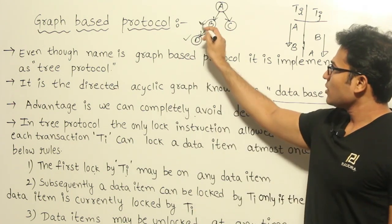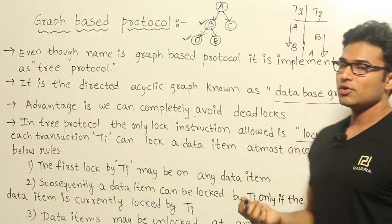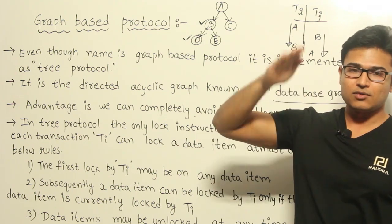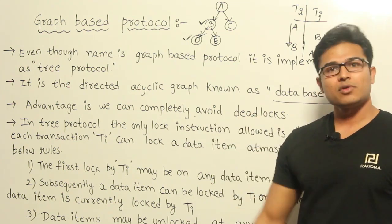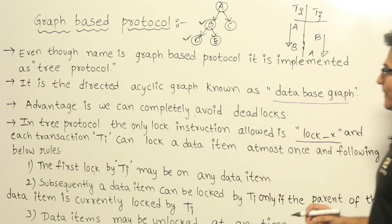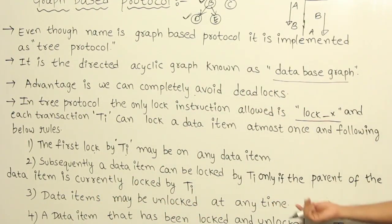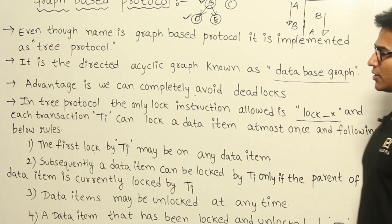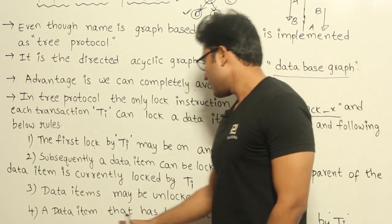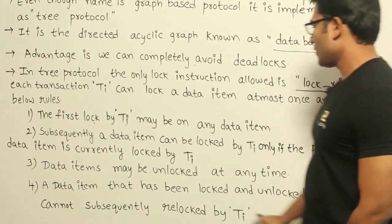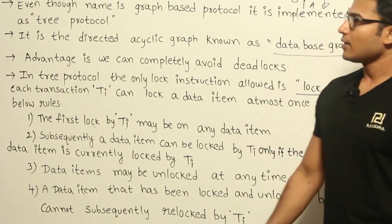For example, if Ti has locked data item D initially, it should not then lock B. But if it wants both B and D, it must first lock B, then lock D. This ensures you always start from the top and come down — maintaining ordering for lock requests. If everyone follows that order, there will be no deadlocks and no cycles. Data items may be unlocked at any time without waiting for commit. A data item that has been locked and unlocked by Ti cannot subsequently be locked by Ti again.